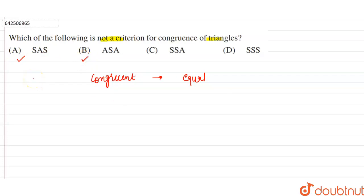So we can say that SAS and ASA can be the criteria for the congruence of triangles.